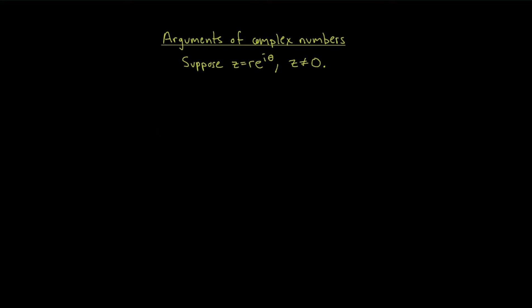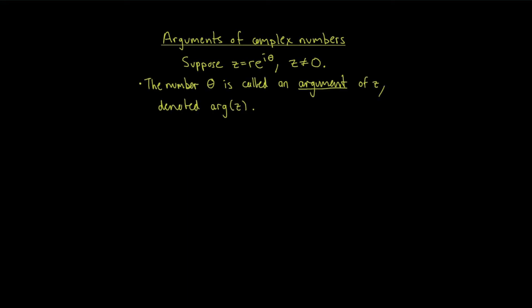Before we go to the next example, I'd like to say something briefly about arguments of complex numbers. If you have a non-zero complex number z given in polar form as r·e^(iθ), then the number θ is called an argument of z, denoted θ = arg(z) with a lowercase a. An argument of z is not unique: if you replace θ by θ plus any integer multiple of 2π, you get another valid argument of z.